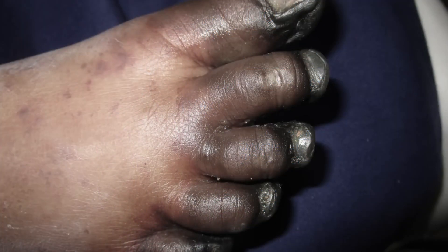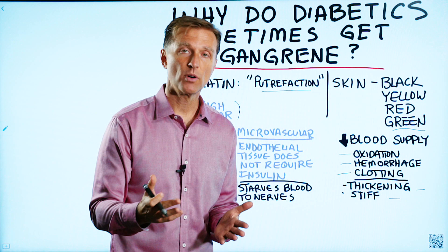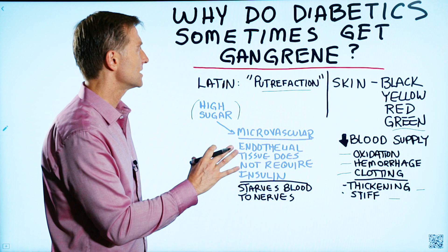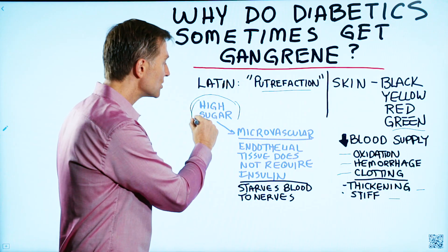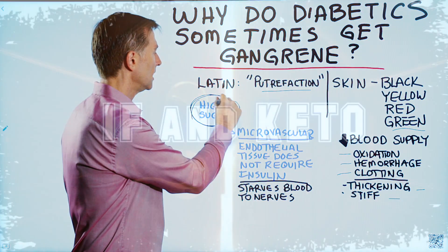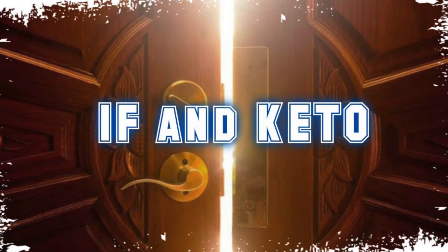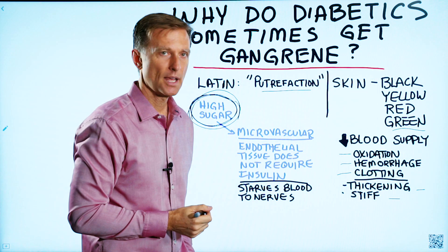What could be done for this condition? The most important thing is to avoid this in the first place by not consuming so much sugar — doing keto and intermittent fasting — so you never end up in this situation.